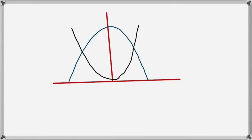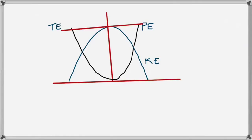The total energy is constant at ½kA², equal to the maximum potential energy and the maximum kinetic energy. So on the graph you draw a horizontal line through the peaks of both parabolas — that is the total energy line, and both curves touch it at their respective maxima.